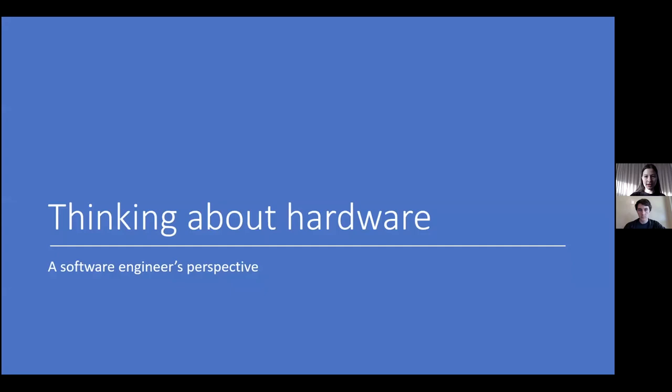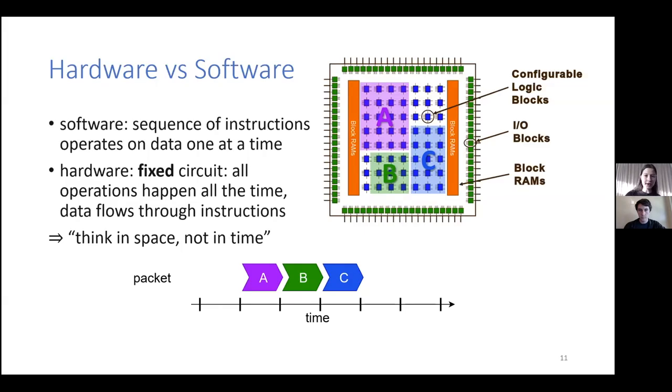So now we know what we are trying to do, router at line speed on the NetFPGA. And before I tell you about how I built the router, I first want to explain how I think about hardware, how I, as a software engineer, needed to change my perspective in order to be able to solve the problems I ran into. So let's talk about that. In software, we think about software as a sequence of instructions, which operates on the data one after another. In contrast, hardware is a fixed circuit. So the data moves through this fixed circuit. And if we want to perform, for example, operations A, B, and C on our data, then we will have a part of the circuit that does A, a part that does B, and a part that does C. And data will move through the different parts of the circuit.